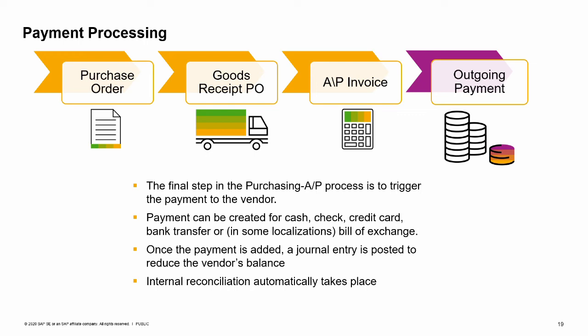After you have entered an AP invoice, the final step in the purchasing process is to trigger the payment to the vendor. The outgoing payment document can be created for the following payment means: cash, check, credit card, bank transfer, or in some localizations, bill of exchange. Once the outgoing payment is added, an appropriate journal entry is created that reduces the vendor's balance. When creating an outgoing payment to fully or partially clear a specific document or transaction, an internal reconciliation automatically takes place. Multiple outgoing payments can be created together by the payment wizard, which processes AP and AR documents in transactions that are not fully paid, credited, or reconciled, as well as unreconciled or allocated payments on account. When creating outgoing payments, either individually or with the payment wizard, you can also partially pay invoices. Payment processing is considered to be part of the banking module in SAP Business One.